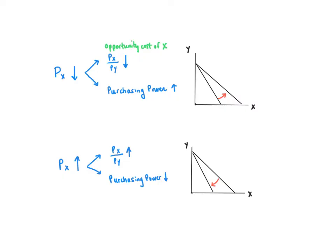Changing the price of X not only changes the slope of the budget line, but it also changes the affordable set. When the price of X goes down, the affordable set expands and the consumer's purchasing power increases. For the same amount of income, because the price of X is lower, the consumer now feels richer, inducing her to buy more normal goods and fewer inferior goods. When the price of X goes up, the budget line rotates in, shrinking the budget set and lowering purchasing power. Now the consumer feels poorer and buys fewer normal goods and more inferior goods.